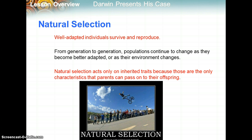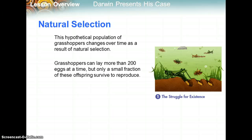Well-adapted individuals for a certain environment will survive and reproduce. From generation to generation, populations continue to change as they become better adapted or as their environment changes. Natural selection acts only on inherited traits because those are the only characteristics that parents can pass on to their offspring. For example, a young adult male making a really bad decision might not survive, so the trait of having really bad decision-making skills might not get passed on — that's natural selection working right there.